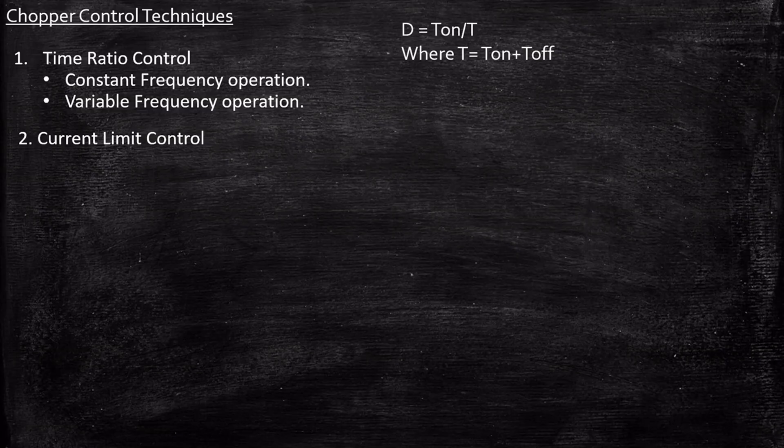So let's go in deep into what these methods are. Before that, we have to understand one important concept: the duty cycle. Duty cycle is a representation of the duration for which we are turning on or turning off the switch, meaning it is the ratio of T_on by T, where T is the sum of T_on plus T_off. T_on is the duration in which the switch is on, and T_off is the duration in which the switch is off.